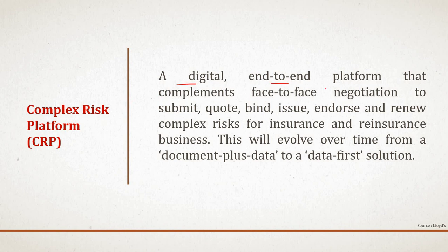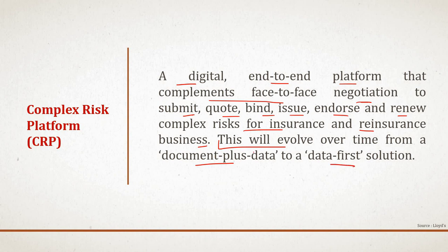The formal definition is: a digital end-to-end platform that complements face-to-face negotiation to submit, quote, bind, issue, endorse and renew complex risk insurance and reinsurance. In Blueprint One they have not defined what complex risk is, but this is how they have stated it. This will evolve over time from a document-plus-data solution to a data-first solution.